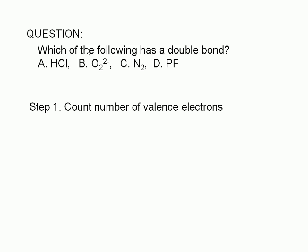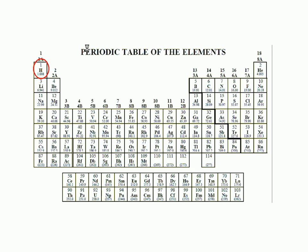The first step in determining the Lewis structure of a diatomic molecule is to count the number of valence electrons. To do that, we first locate the atoms in the periodic table. Hydrogen is located in group 1A, therefore it has one valence electron. Fluorine and chlorine belong to group 7A, therefore each fluorine or chlorine atom has seven valence electrons.